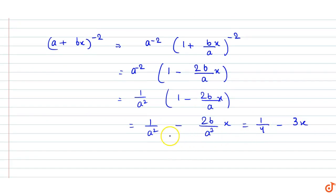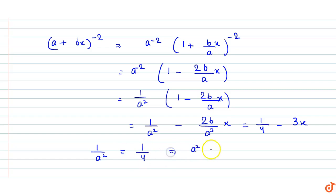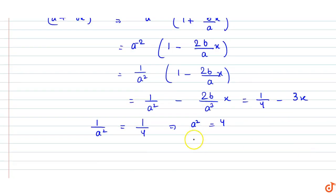तो यहाँ पर constant की coefficient को compare किया तो 1/a² की value 1/4 हो जाएगी। तो यहाँ से a² की value 4 आ गई, और a की 2 possible values हैं: plus minus 2.